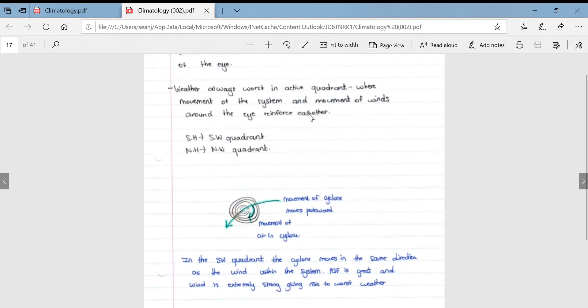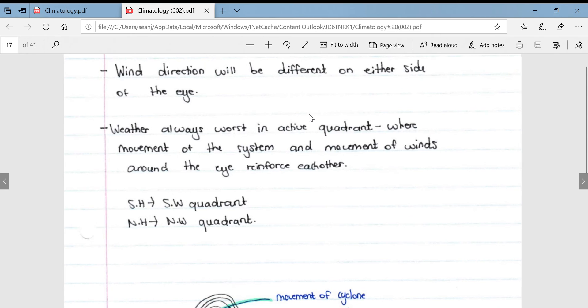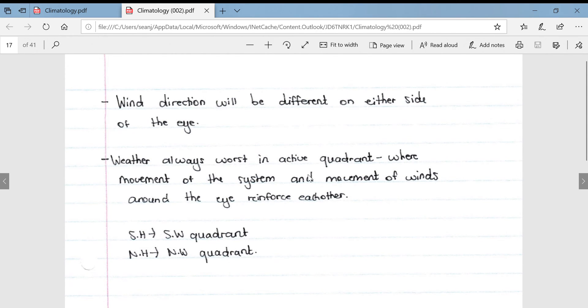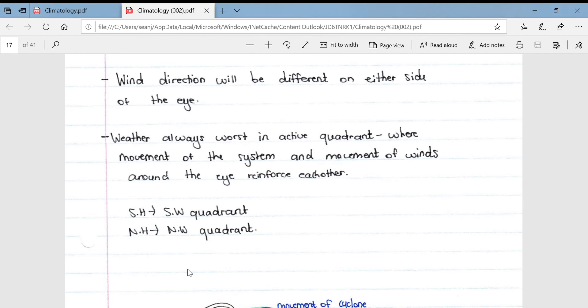Wind direction will be different on either side of the eye. The weather is always worst in the active quadrant, and this is because of where the movement of the system and movement of the winds around the eye reinforce each other. So in the southern hemisphere the active quadrant is located in the southwestern part of the tropical cyclone. In the northern hemisphere, the active quadrant is associated with the northwestern side of the tropical cyclone.